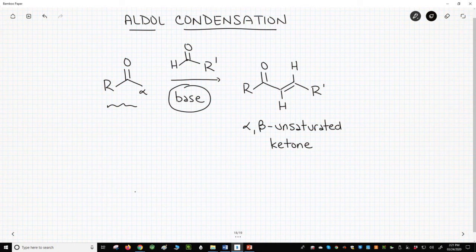The base deprotonates the ketone to make an enolate. After several steps and loss of water, an alpha-beta unsaturated ketone is formed as the product.